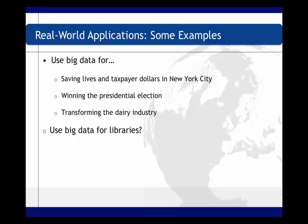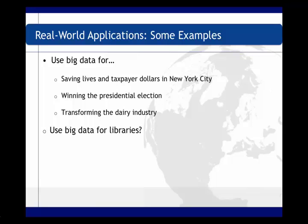Another interesting example is Obama's presidential election, where his analytics team used big data tools to help him win. The team used four streams of polling data to build a detailed picture of voters in key states. For example, they had polling data from about 29,000 people in Ohio alone — nearly half of 1% of all voters there — allowing deep dives into exactly where each demographic and regional group was trending at any given point.